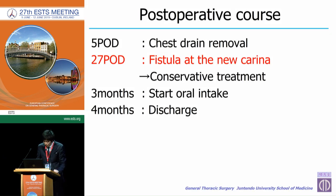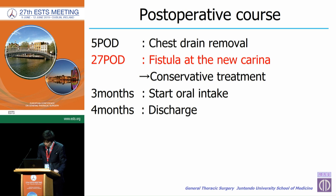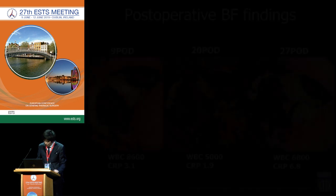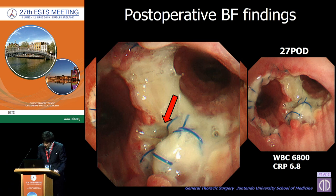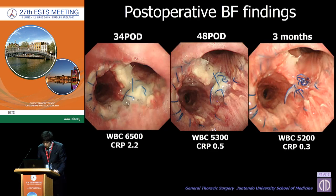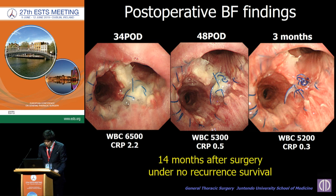As for the postoperative course, 27 days after operation, a fissure at the new carina was detected. However, the general condition was stable so we performed conservative treatment, and 4 months later he was discharged from the hospital. Postoperative bronchoscopic findings showed the fissure at the membranous side of the new carina. Under conservative treatment, the fissure gradually closed and 3 months later the fissure was completely cured. He is now under no-recurrence survival at 14 months after surgery.